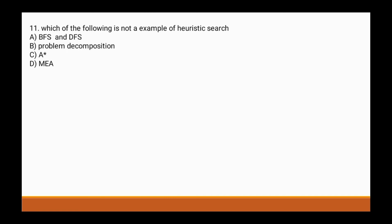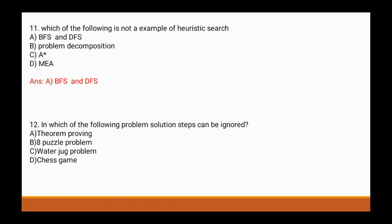Question 11: Which of the following is not an example of heuristic search? Options are: a) BFS and DFS, b) problem decomposition, c) A-star, d) MEA. The correct answer is a) BFS and DFS.